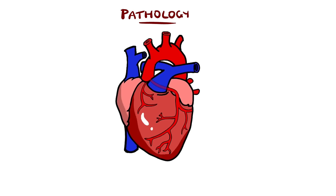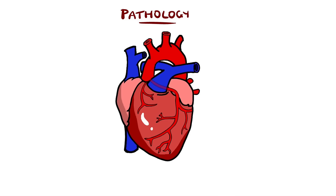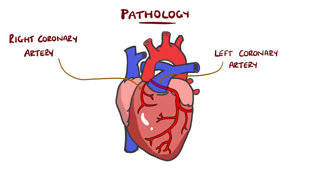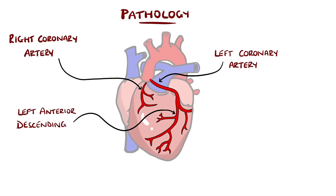The heart is supplied with blood via the coronary arteries, which are connected to the aorta near the aortic valve. When the heart is in diastole, the backflow of blood to the aortic valve leads to the coronary arteries being perfused. There are two main coronary arteries, the left and the right. The left coronary artery divides into the left anterior descending artery, which supplies the left ventricle and interventricular septum, as well as some of the right ventricle.